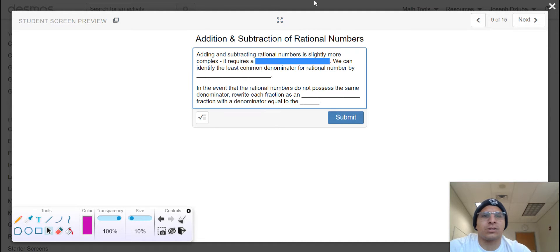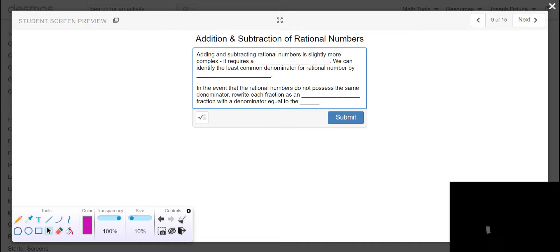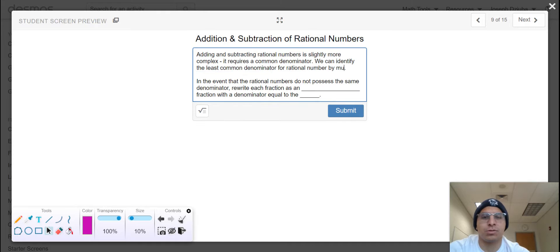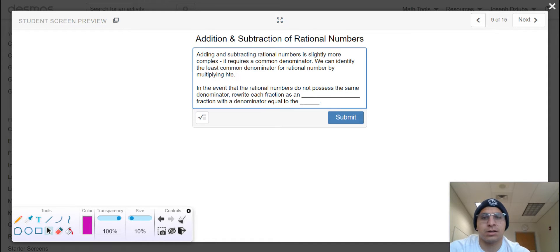And now the gauntlet: addition and subtraction of rational numbers. Addition and subtraction is slightly more complex because it requires a common denominator. We can identify the least common denominator for rational numbers by multiplying the corresponding denominators together.